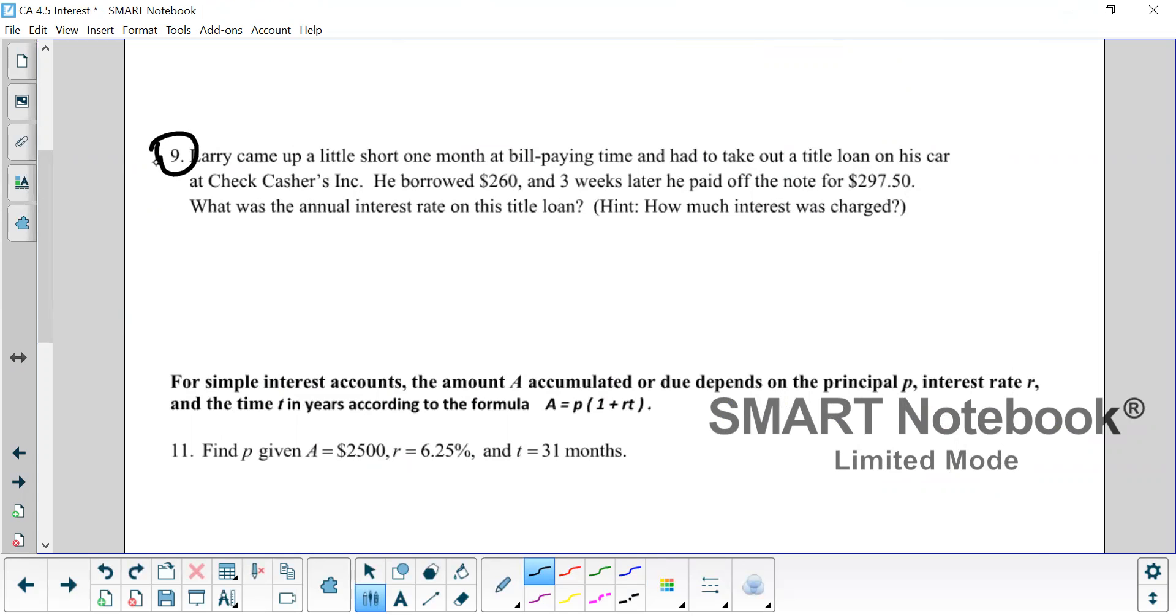Okay, here's what I'm hoping you came up with. He borrowed $260, that's the P, the starting amount. Three weeks later is our time, but it's not in years, so we have to make a fraction. It's three weeks over 52, because there's 52 weeks in a year. And he paid off the note for 297.50, that's an A value, that's the accumulated value, it's what he started with plus whatever interest he was charged. And then the last question, what was the annual interest rate on this loan? This is what the problem is asking us to find. So this is our unknown, it stays a variable, and it's the rate, so I'm going to use R.